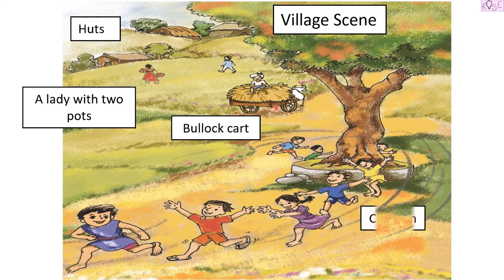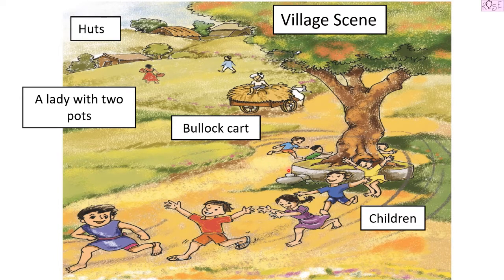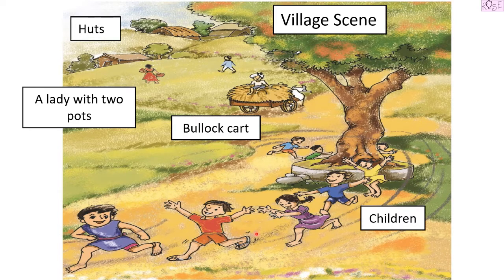After that, what else can we see? We can see lots and lots of children here running, and they seem very happy and cheerful. They are running in one line, playing around this big tree. This is a line of so many children running one after another. How many children are there? Let's count — one, two, three, four, five, six, seven and eight. So eight children are playing together, running one after the other around this big tree.